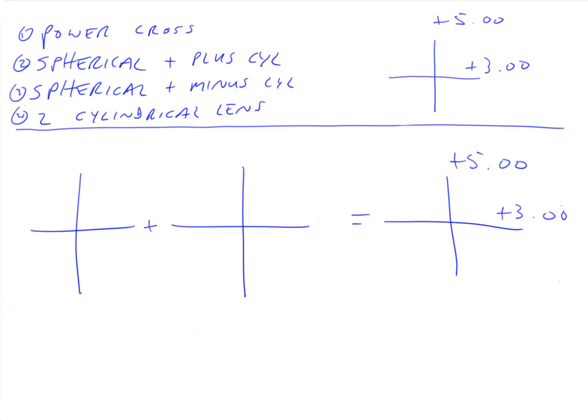Well, when we've solved for plus cylinder, we're adding. So we looked at the lowest number and made that the spherical lens. So with minus cylinder, we do the opposite. So our spherical lens is the highest number. So that would be a plus five sphere.